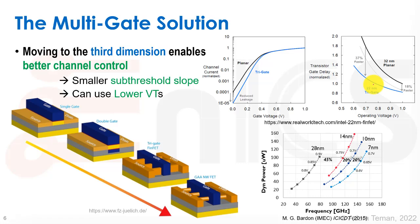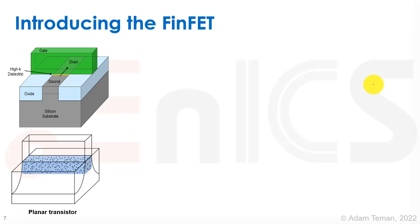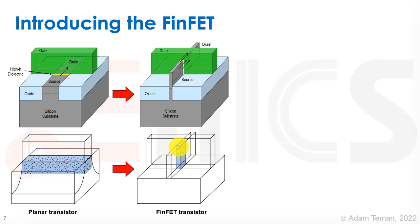FinFETs and multi-gate solutions are really the direction the world has gone. In a planar transistor, source, drain, and gate sit on the substrate with carriers running through a wide, shallow channel. In a FinFET, the source and drain are raised above the substrate and the gate wraps around them. The channel is a confined region — the yellow fin structure — and carriers flow through this narrow area rather than across a broad planar channel.